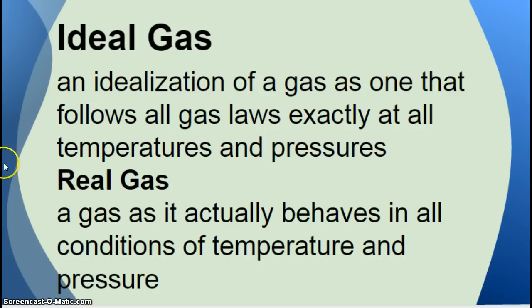Ideal gas versus a real gas. What does the word ideal mean? It basically means perfect, and a real gas is what we actually have in real life. So a real gas is a gas as it actually behaves in all conditions of temperature and pressure. Now, scientists sometimes have to look at ideal gases and say, well, if the gas was perfect, then it would be an idealization, or the perfection, of a gas as one that follows all gas laws exactly at all temperatures and pressures.